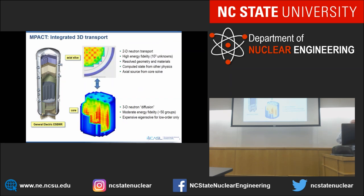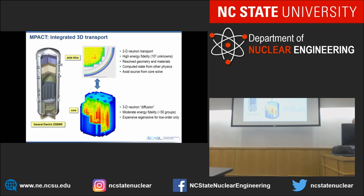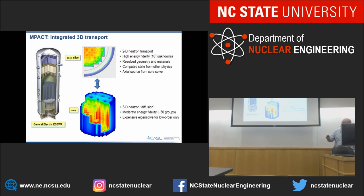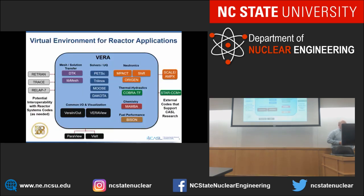IMPACT is a CASEL code that performs full 2D neutron transport for every axial slice across the whole reactor — not just a single lattice — so boundary conditions are now correct. It uses temperatures and densities computed from the other physics codes, resolves geometry and materials, and uses relatively high energy fidelity: 51 groups with six subgroups, in the hundreds-of-groups range. It iterates between the 2D transport and a 3D core diffusion solve. That is one piece of the full VERA integrated system.